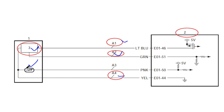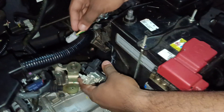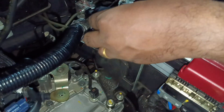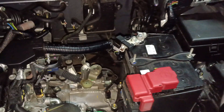Connect the coupler to the current sensor, then connect the negative terminal. Work is completed.